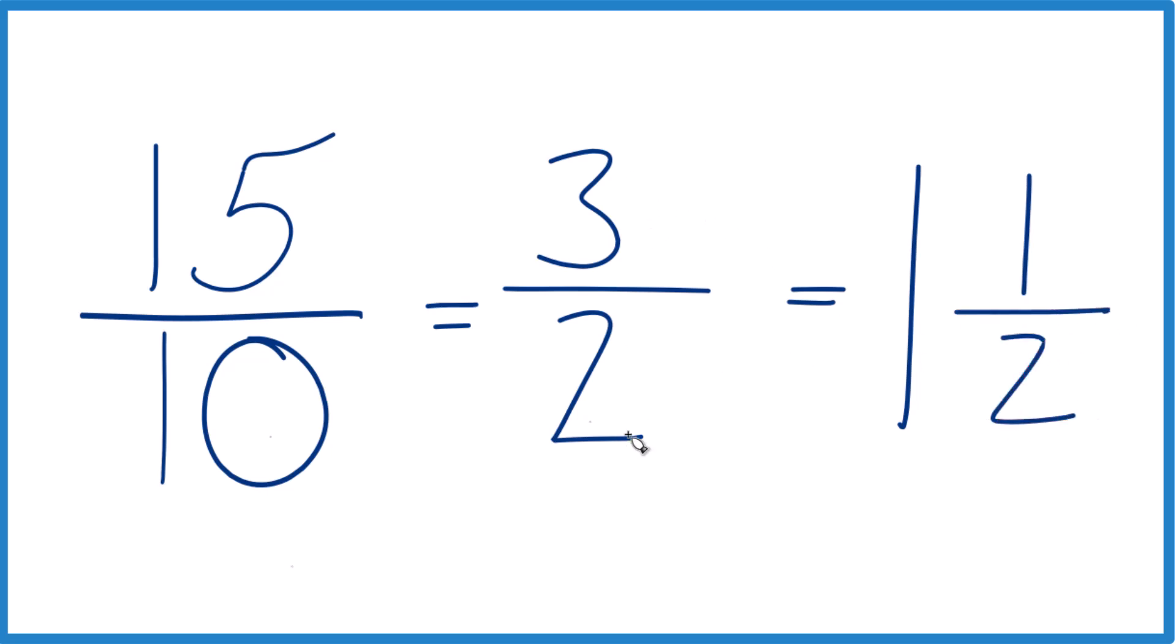And 3 halves is the same as 1 and 1 half, which is the mixed number for 15 tenths as well. So that's how you do it. That's how you simplify 15 tenths. We get 3 halves or 3 over 2. And if we write that as a mixed number, we get 1 and 1 half.